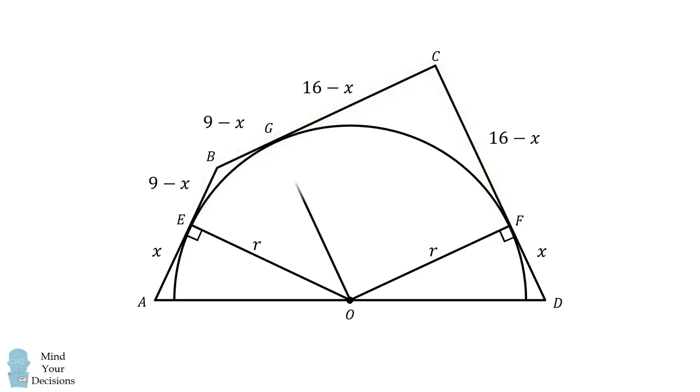From here, we will construct OG, which is a radius of the semicircle. We will then construct OB, and we will also construct OC. We now have one pair of right triangles that are congruent. We then have another pair of right triangles that are congruent, and we have a third pair of right triangles that are congruent to each other.